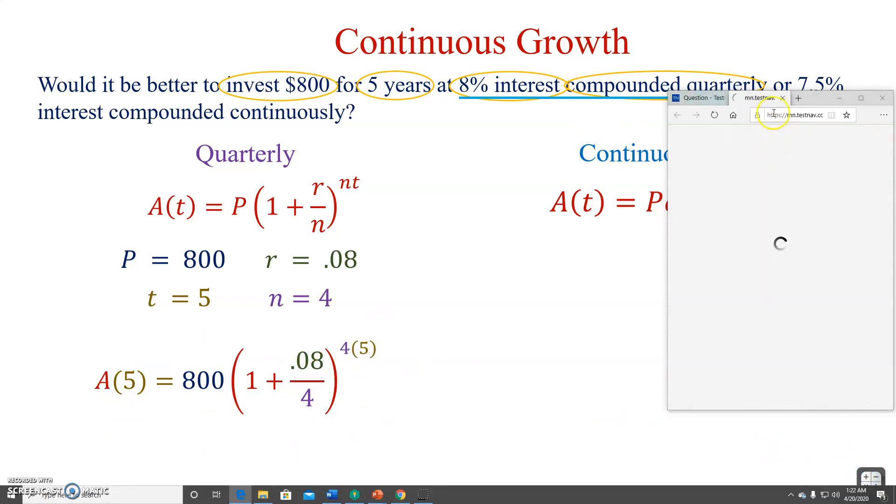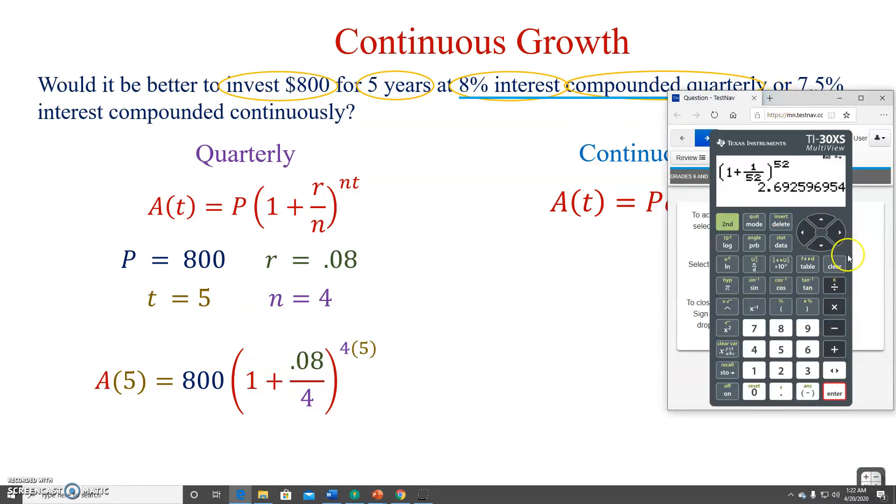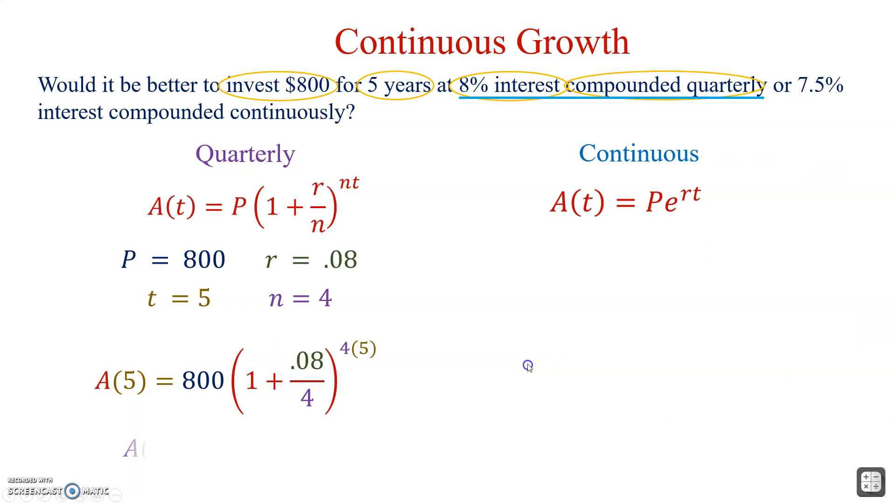We'll go to the calculator. We'll just type it all in. 800 times 1 plus 0.08 over 4. Move it over. Parentheses. That's raised to the 20, 4 times 5. There we go. $1,188.76. $1,188.76.